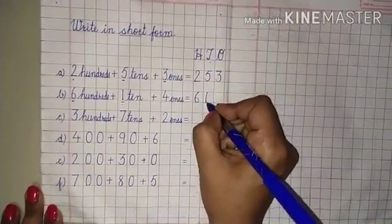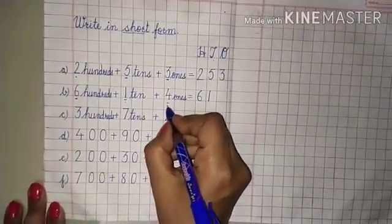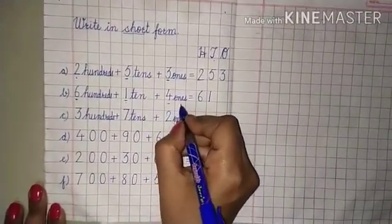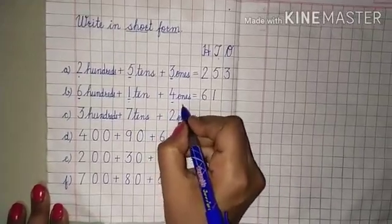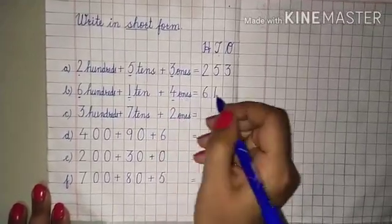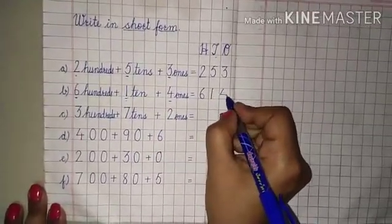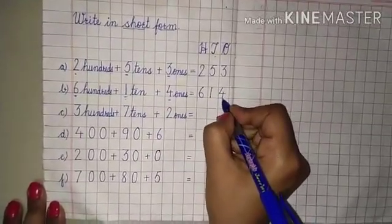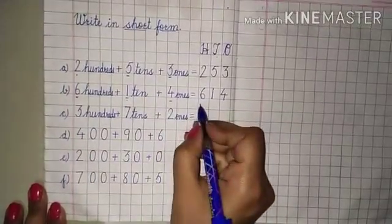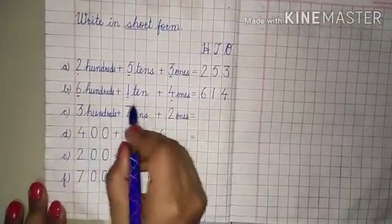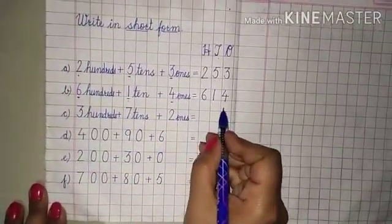Next, four ones. Four ones — so four will come here. It is so simple. Expanded form, short form.